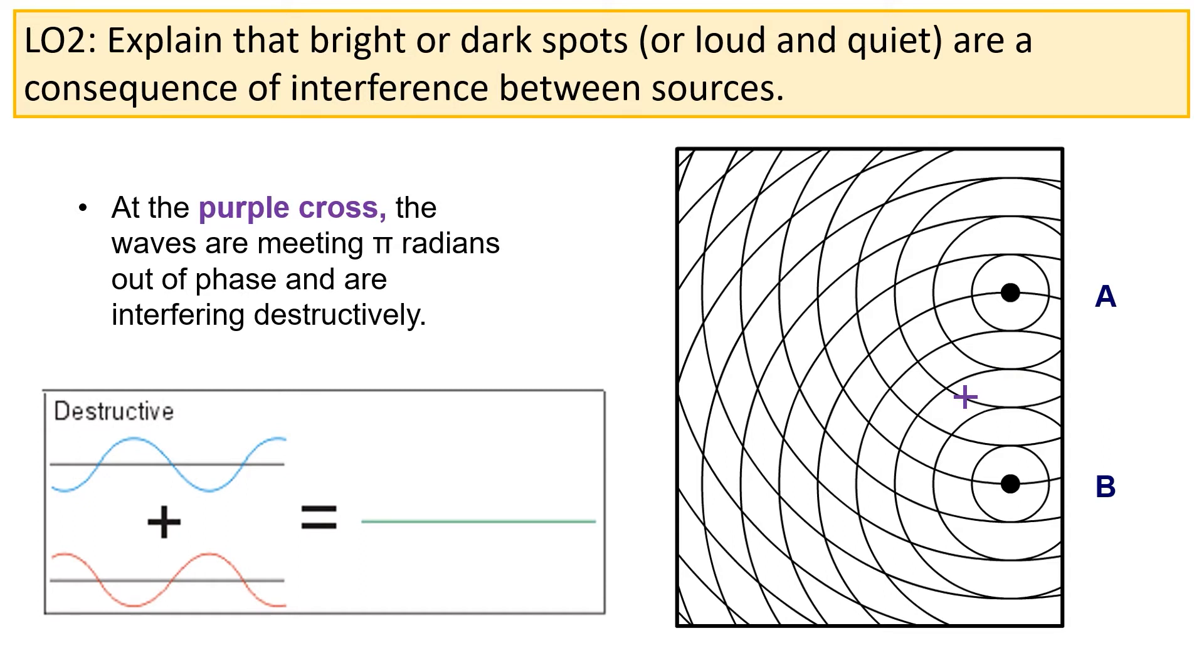However, at other points, for example at the purple cross, the waves are going to be meeting pi radians out of phase, and therefore we're going to be getting destructive interference at those points.